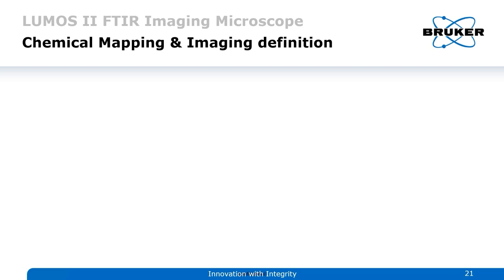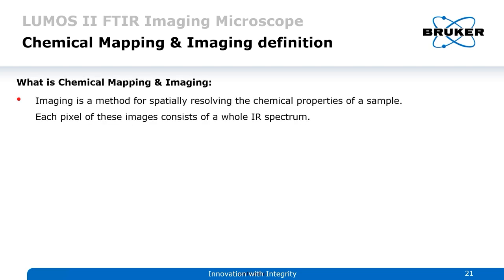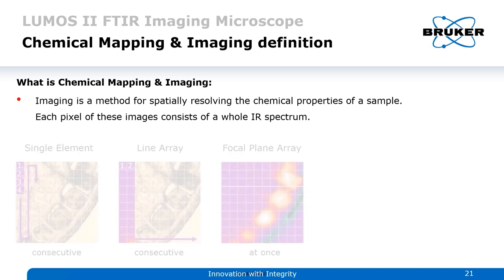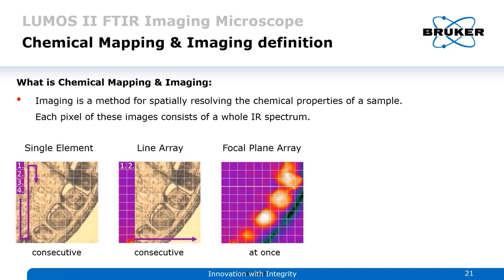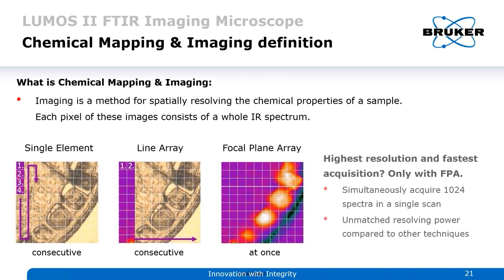Now we have our microplastics on an appropriate filter and need to decide what kind of analysis to do: mapping or imaging. Imaging is a method for spatially resolving the chemical properties of a sample — you know what kind of particle is at what position. We create pixels, each containing a whole FTIR spectrum. With a single element detector you do every pixel consecutively; with a line array, line by line; with a focal plane array you take the whole image at once. The highest resolution and fastest acquisition is only achievable with an FPA detector — simultaneously acquiring 1024 spectra in a single scan of about 1.5 seconds.